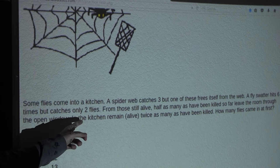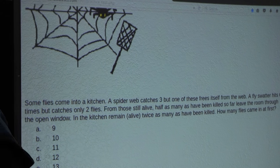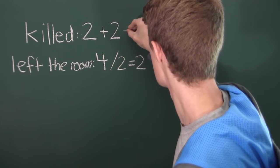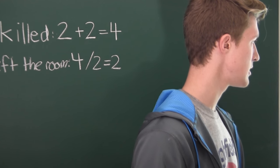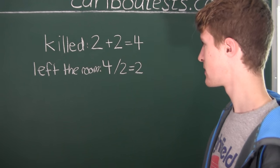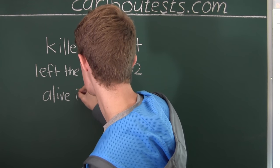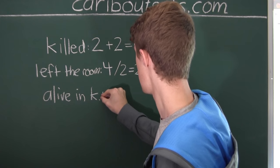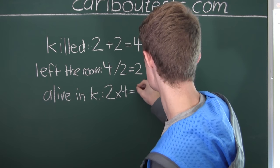Now, the next sentence says in the kitchen remain alive twice as many as have been killed. That means that no more flies are being killed, and we can now just add this up. So two plus two is equal to four. Rereading the sentence, it says in the kitchen remain alive twice as many as have been killed. Twice as many as have been killed, that would just be two times four. So alive in the kitchen, we will just write K dot, which will mean kitchen. And this is two times four, which is equal to eight.